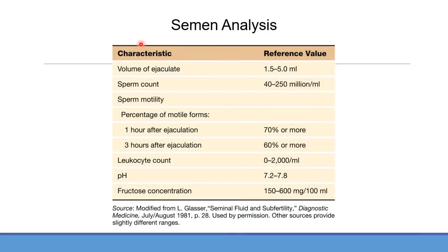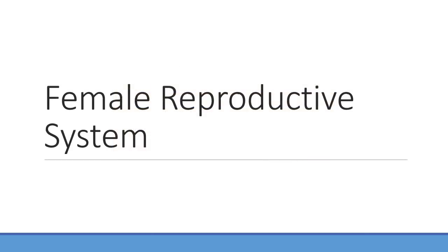Looking at semen analysis: this is useful in reproductive endocrinology when working with patients having issues getting pregnant. You can look at the volume of the ejaculate and the actual sperm counts — maybe there's an issue where they're not producing enough sperm, which could be a result of problems with LH and FSH. You can also look at motility and the percentage that remains motile after a certain period of time. Other things include fructose concentration — too low a fructose and the sperm may not be motile because they don't have enough energy. Any questions on that? Let's go ahead and do a ten-minute break and we'll come back and continue on.